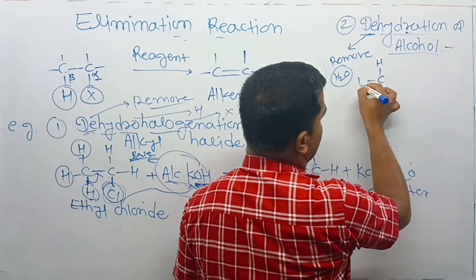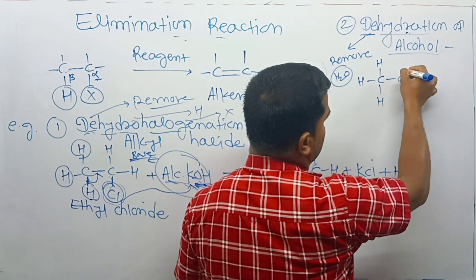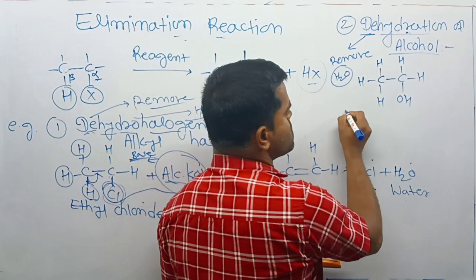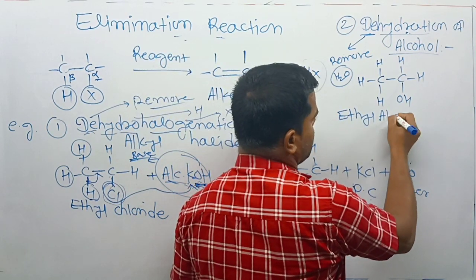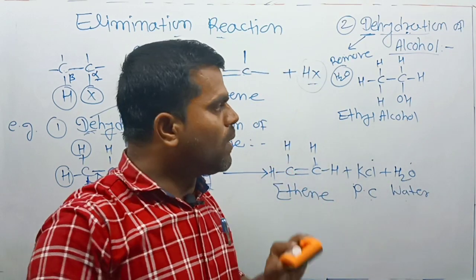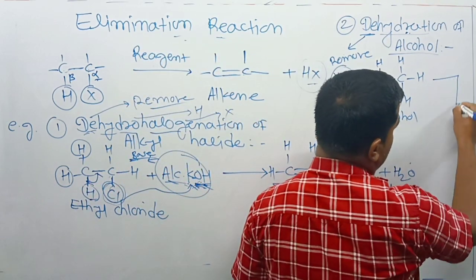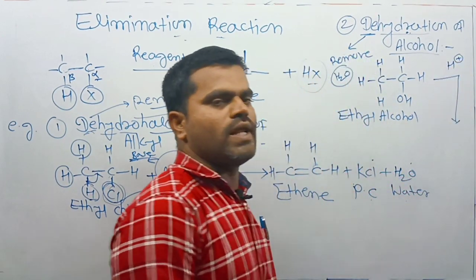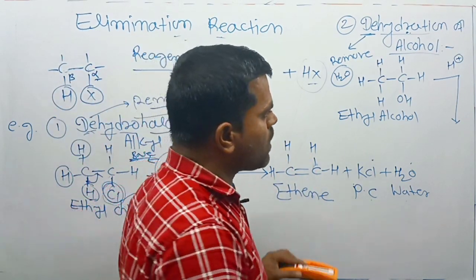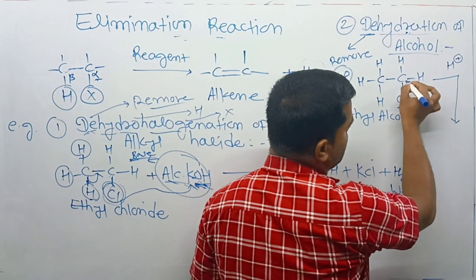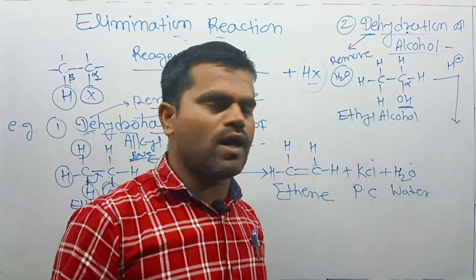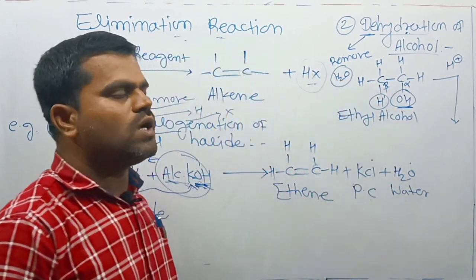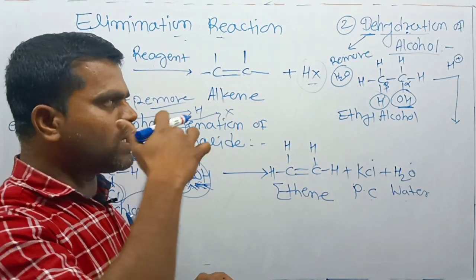Here ethyl alcohol is the reactant. Ethyl alcohol contains carbon, hydrogen, and an OH group. This ethyl alcohol is reacted with H⁺, which is an acid catalyst. The OH is on the alpha carbon, and H is on the beta carbon.